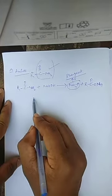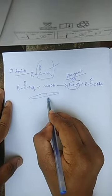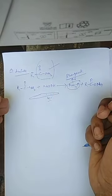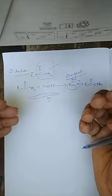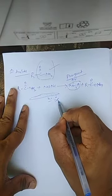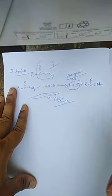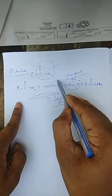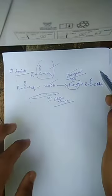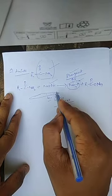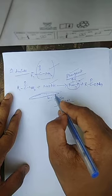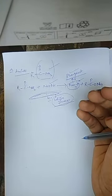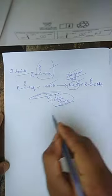To confirm it is ammonia: take a glass rod, dip it in HCl solution, and bring that HCl-dipped glass rod near the test tube from which the ammonia gas is being evolved. The white fumes produced on the glass rod confirm that the evolved gas is ammonia.